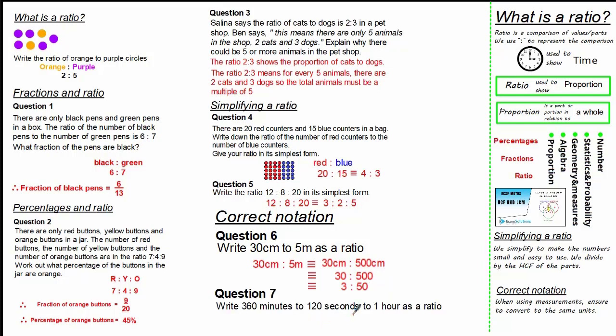In this last question we are asked to write 360 minutes to 120 seconds to 1 hour as a ratio. Now we need to convert them all to the same units, so I am going to choose minutes. 360 minutes is 360 minutes, 120 seconds is 2 minutes, and 1 hour is 60 minutes. Now we have made all our units the same, we can now identify the highest common factor. The highest common factor is 2. So simply removing all our units and dividing each part by 2 we have an equivalent simplified ratio of 180 to 1 to 30.